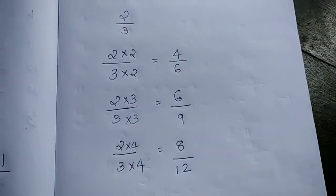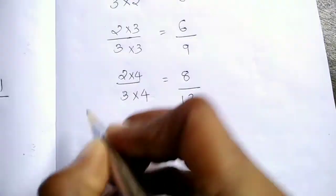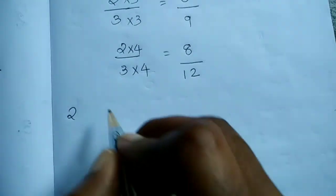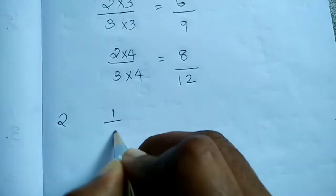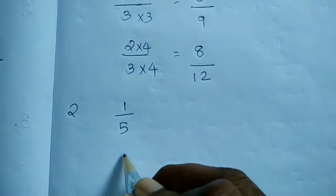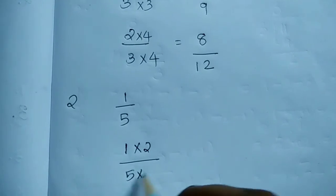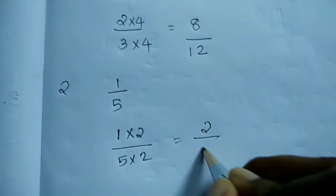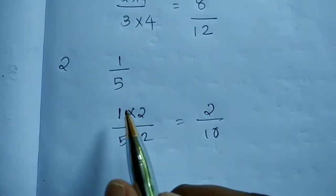Equal fractions are equal. Find the equivalent fraction of 1 by 5. Multiply 1 by 2 and 5 by 2 — we get 2 by 10. 2 by 10 is an equivalent fraction of 1 by 5.